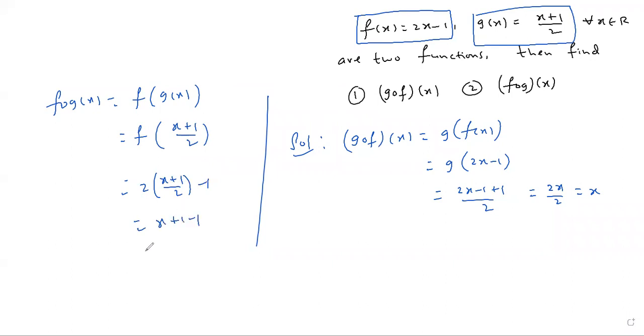2 and 2 gets cancelled. Whereas x plus 1 minus 1 which equals x. So f circle g of x is x.